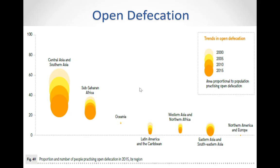Sanitation is essential to the survival and development of children. Currently, there are 2.4 billion people worldwide who do not use improved sanitation. One in seven people — 946 million — go in open fields, forests, open bodies of water or other open spaces. This practice is known as open defecation. Of those who practice open defecation, 9 out of 10 live in rural areas.